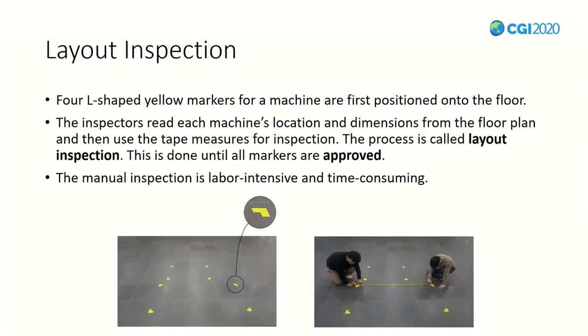The floor plan plays an important role in planning the placement of facilities in a fab. Because piping is always connected precisely to the facility, misplaced piping can affect the entire process. Therefore, it is very important to place the facilities exactly as shown in the floor plan. Before the facilities are placed in the fab, field workers correctly place 4 L-shaped yellow markers where the facility will be placed as shown in the floor plan. Four L-shaped yellow markers represent one facility. However, whether the markers are correctly placed or not, inspection is absolutely necessary.